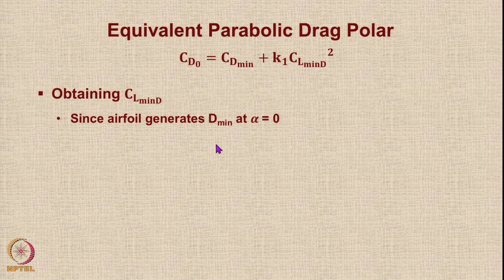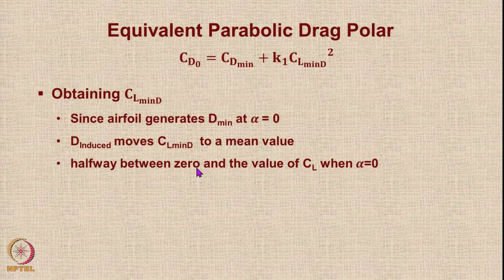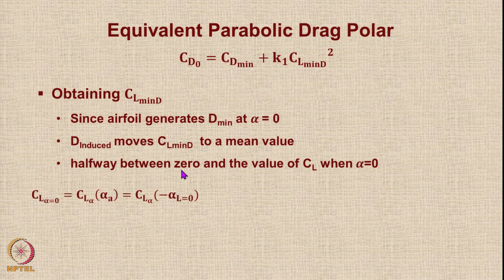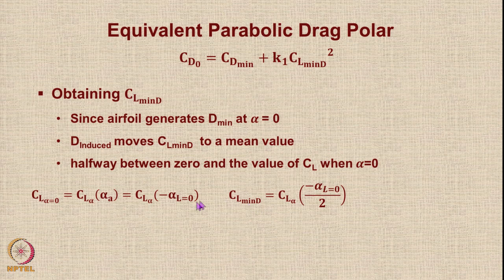Since the airfoil is assumed to generate minimum drag at alpha equal to zero, we assume the induced drag moves CL_min_drag to a mean value halfway between zero and CL at alpha equal to zero. So CL_min_drag = CL_alpha · (−alpha_L0) / 2. Knowing the airfoil, you can get this value along with CL_alpha. We have a separate tutorial on calculating CL_alpha of an aircraft.